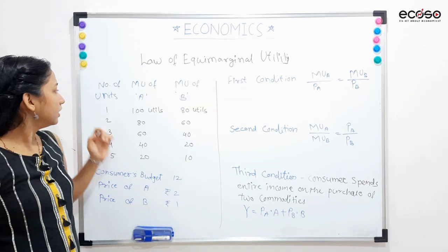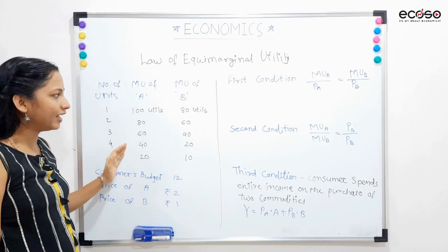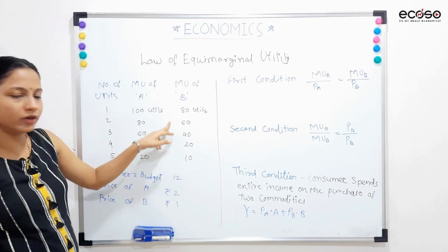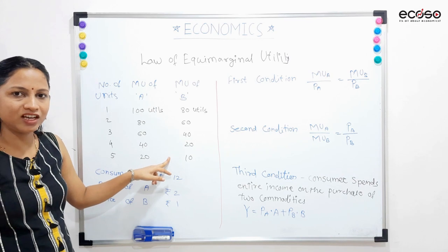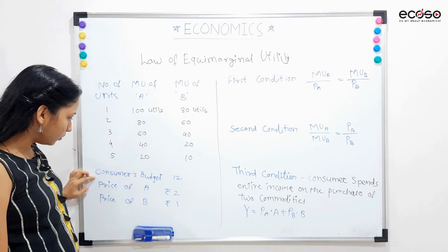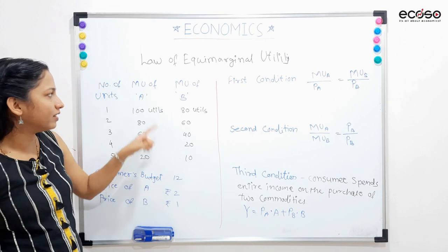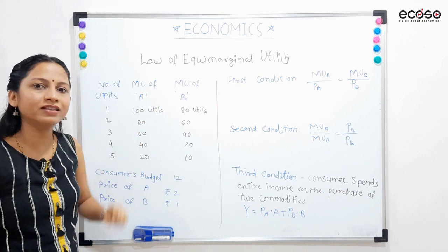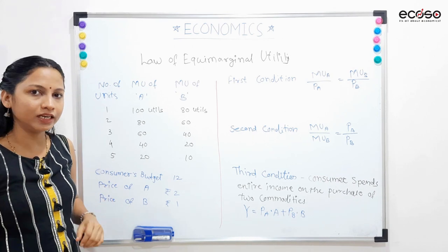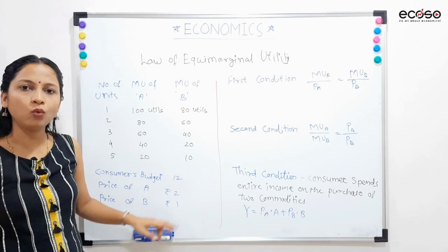Now, we will start with an example. In this example, we have given number of units, then the marginal utility of commodity A, and marginal utility of commodity B. Commodity A and B dono ki marginal utility decline hoti ja rahi hai, kyunki Law of DMU experience ho raha hai. Consumer ka budget diya hua hai jo hai 12 rupees. Consumer 12 rupees commodity A and B par is tarah se spend kar raha hai ki usse maximum satisfaction mile ya equimarginal utility mile. Commodity A ki price hai 2 rupees, commodity B ki price hai 1 rupee.